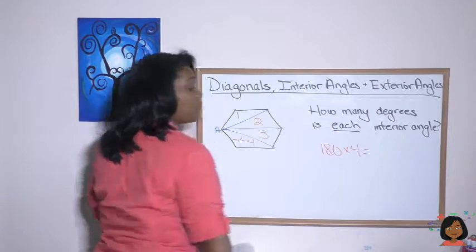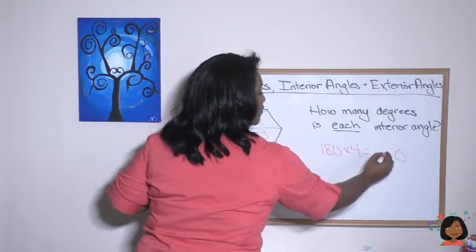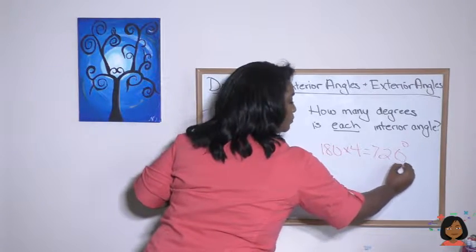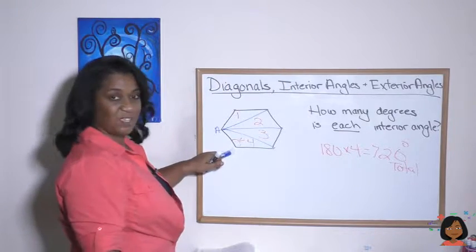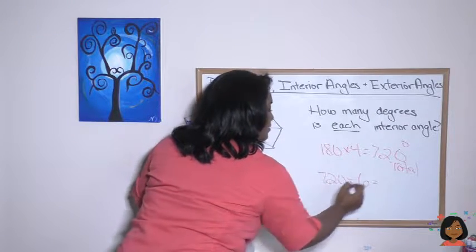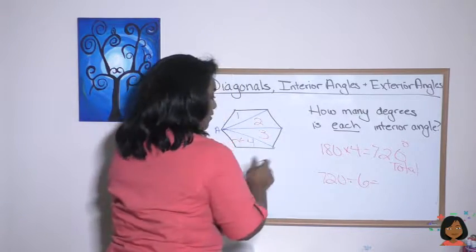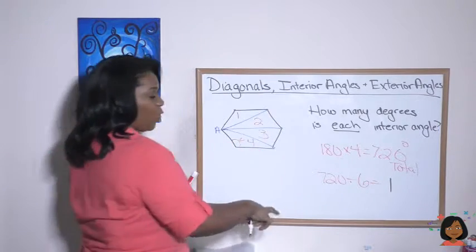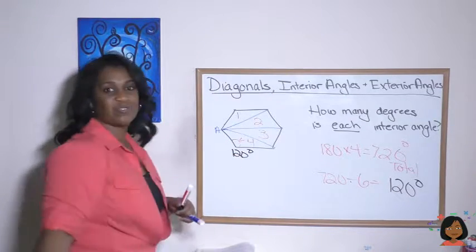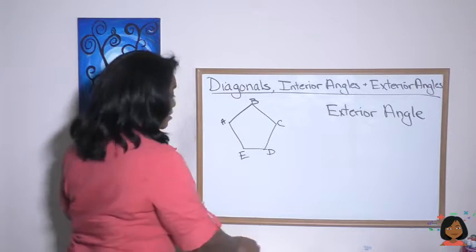Each triangle has 180 degrees, so we take 180 times four to find the total degrees in the hexagon, which is 720 degrees. We divide 720 by six vertices, which gives 120 degrees. So each interior angle of a regular hexagon is 120 degrees.